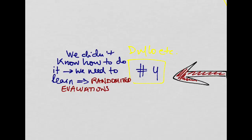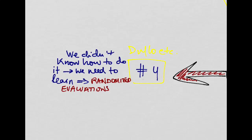The last view, held by Duflo and others, is somewhat more empirically oriented — it's the one that has been advocating for randomized evaluations and randomized controlled trials. This view says that aid did not work because we didn't know what we were doing; we didn't know how to positively affect poor countries because we just didn't understand how poverty worked. What we need to do is experiment and learn from those experiments in order to design aid programs well and make them more cost-effective.